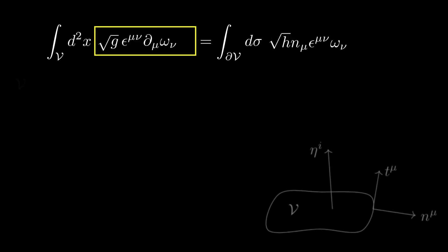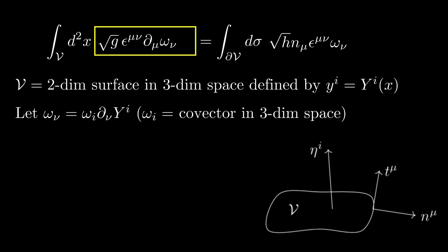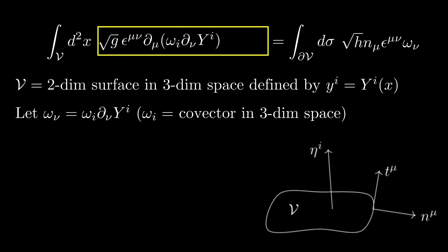Now consider the region V embedded in a three-dimensional space with coordinates y-i, where the subspace V is defined by y-i equals capital Y-i of x. Let omega-nu be given by omega-i times partial-nu y-i for some covector omega-i in the three-dimensional space, where partial-nu y-i is shorthand for the derivative of y-i with respect to x-nu. Then the integrand on the left-hand side becomes square root g times epsilon-mu-nu partial-mu acting on omega-i times partial-nu y-i. Note that the derivative partial-mu acting on partial-nu y-i vanishes due to the anti-symmetry of epsilon-mu-nu. Thus the integrand becomes square root g times epsilon-mu-nu partial-mu y-i partial-nu y-j partial-j omega-i.